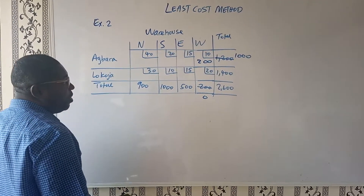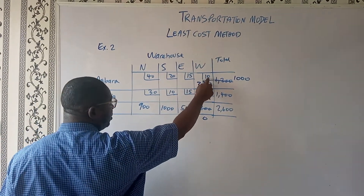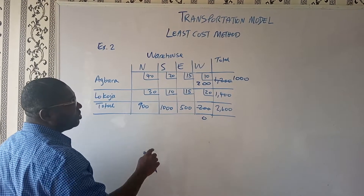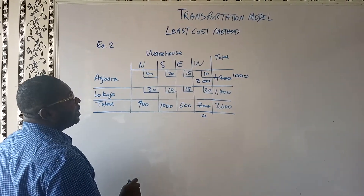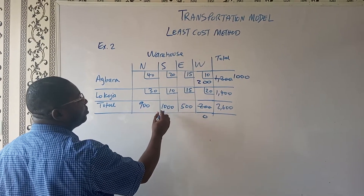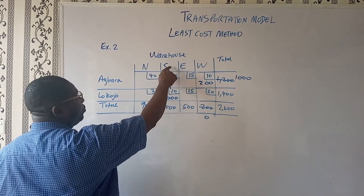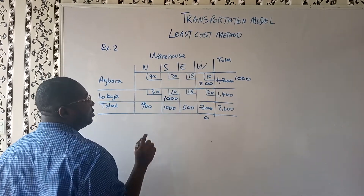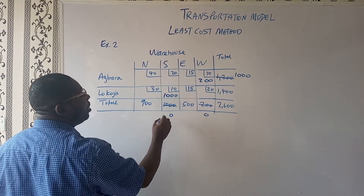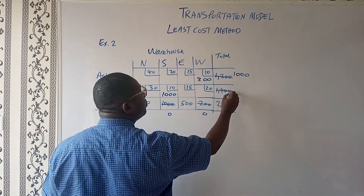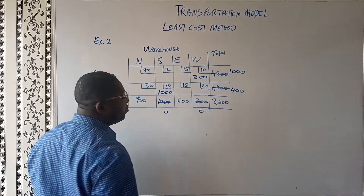West is fully satisfied, and Malvara's remaining supply becomes 1000. The next least cost is still 10. So we come here and fill this value — we're going to have 1000 here to fully fill up the demand of the South. The South demand becomes zero, and Malvara's supply reduces to 400.